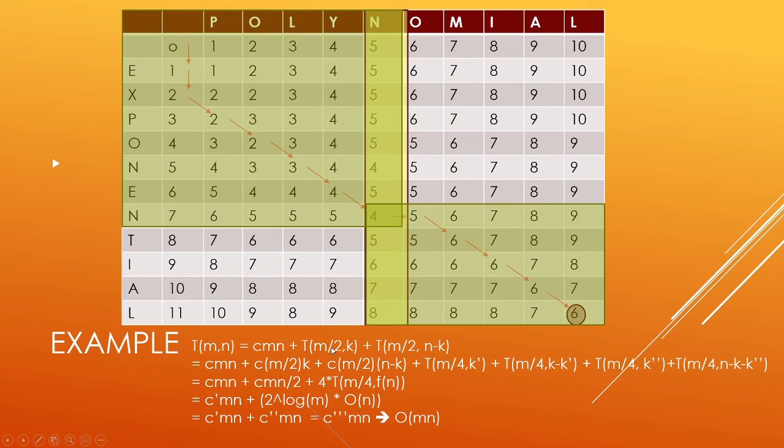And we assume some other k prime is the next critical element. And then k double prime is the element for this. So there's some k here in the middle and some k prime here in the middle for the next problems. Now, what this converges to is that this is some c*MN, and let's say this is some c*MN/2. If you add these two elements, you end up with this. But you are left with four problems now at this step, and they are 4 times T(m/4, k) and some function of n.